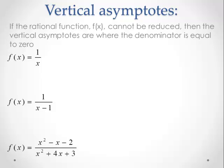Once the fraction is simplified, we only look at the denominator. For each function, the denominator tells us where the vertical asymptotes are going to be, if there are any. For the first function, the denominator is just x, and we're looking for when the denominator is equal to zero. We identify that the vertical asymptote for the first function is at x equals zero.